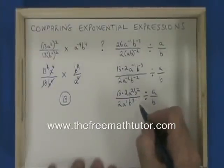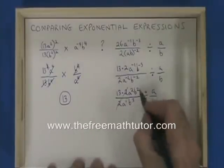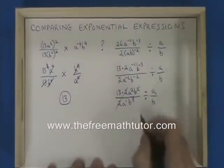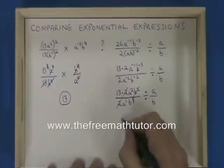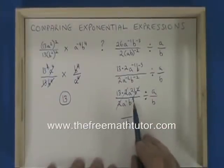Now I'm going to do some cancelling. The 2s cancel. Both of the b's on the top cancel with two of the b's on the bottom. I end up with a b on the bottom of my resulting fraction.